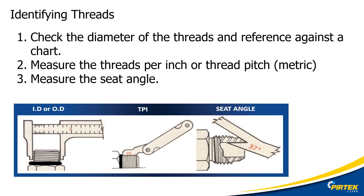There are thousands of fittings and many different thread systems, so identifying threads can be quite challenging. We need to work to a system. First, identify the type of thread, then identify the type of fitting. From the fitting we can derive three types of information: the ID or OD of the thread, the threads per inch or pitch, and the seating angle. Using reference charts and the PERTEC identification system, we can quickly work out what type of fitting we are identifying.